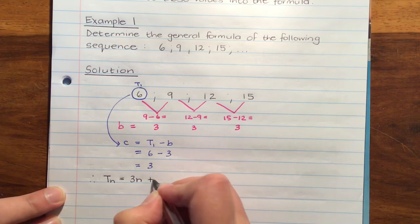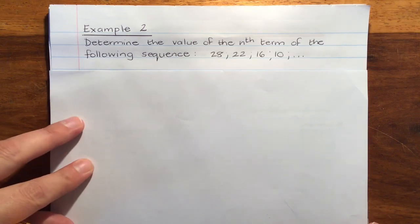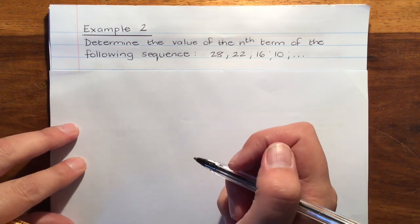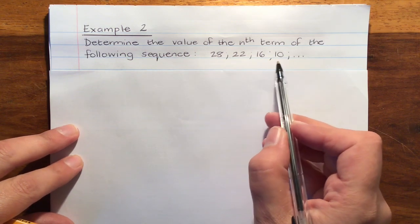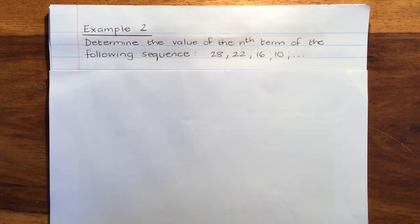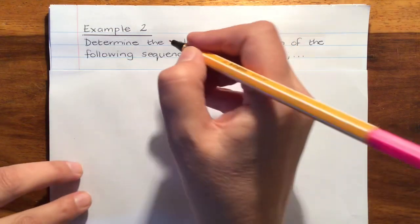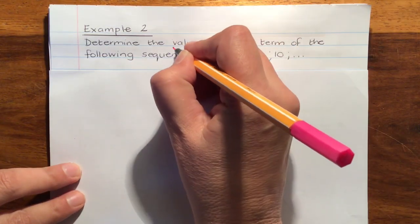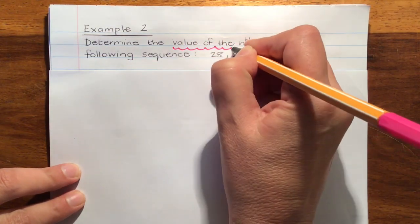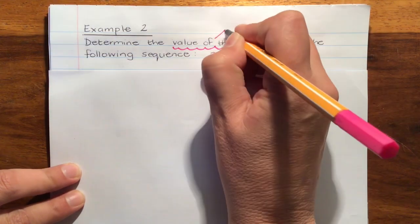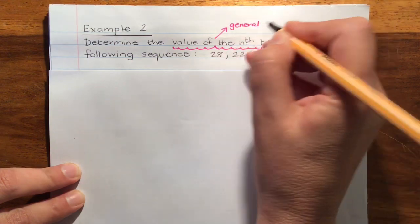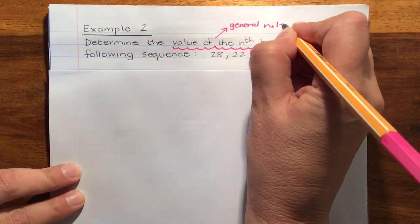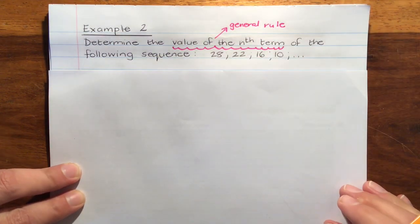Our second example is determine the value of the nth term of the following sequence: 28, 22, 16, and 10. And the first thing we should notice is when they're asking us for the value of the nth term, that's just another way of saying what is the general formula or the general rule. So this question is the same as the last one.